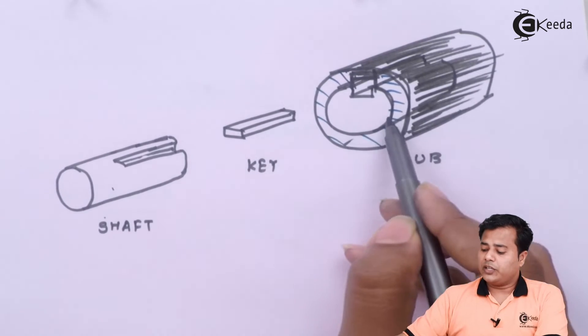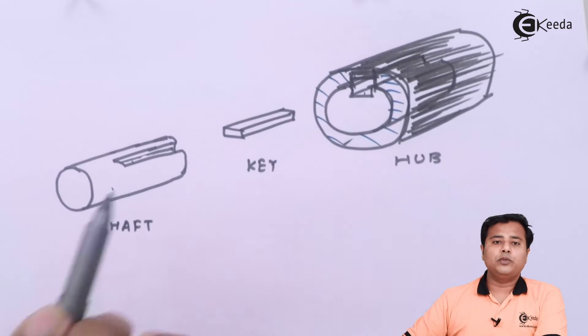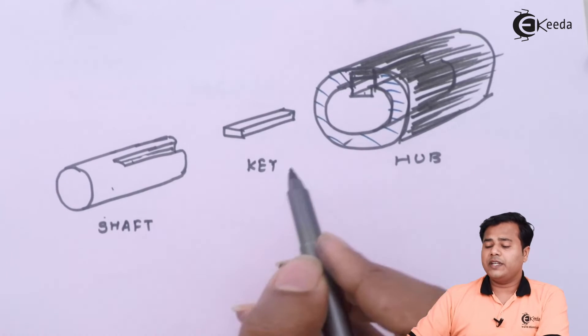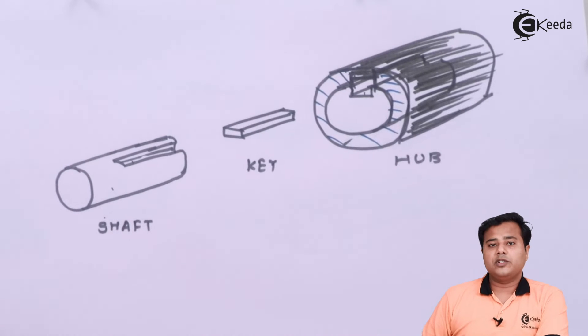So that when the assembly of shaft and hub is made, between their grooves a key can be pushed in. This will facilitate their permanent fixation and since they are fixed then they can rotate together and not relative. So that is how the assembly comes into picture.